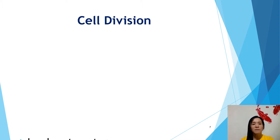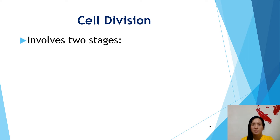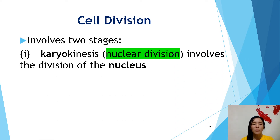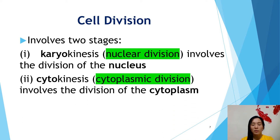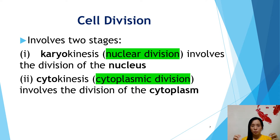Cell division involves two stages. The first one is karyokinesis, which is nuclear division — that means it involves the division of the nucleus. Then cytokinesis, which is cytoplasmic division, involves the division of the cytoplasm. During cell division, the nuclear division occurs first, meaning the nucleus will start to divide into two, then followed by cytokinesis. After cytokinesis, the new daughter cell will be produced.